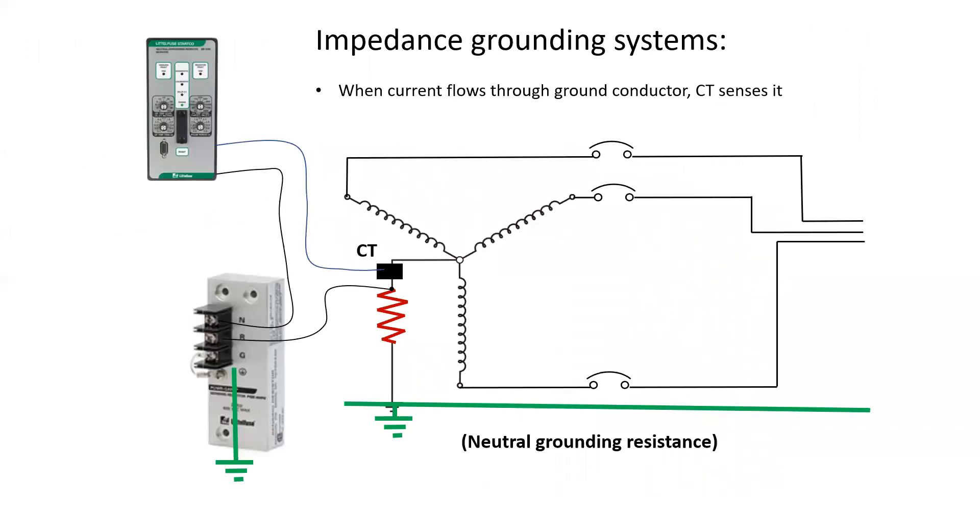Impedance grounding systems will use a CT to monitor when there's current flowing on this ground conductor. And we put a large chunk of resistance in series with the ground conductor, and the CT will register when current flows through it and send that signal off to the control module. So CTs are used in lots of situations where I simply want to know, is there current? Is there no current?